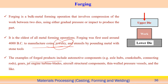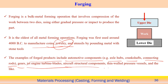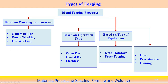Forged products include automotive components such as axle halves, crankshafts, connecting rods, gears, jet engine turbine blades, air cap structural components, and pressure vessels. The types of forging operation can be classified based on work piece temperature, the type of equipment used, and the type of operation.